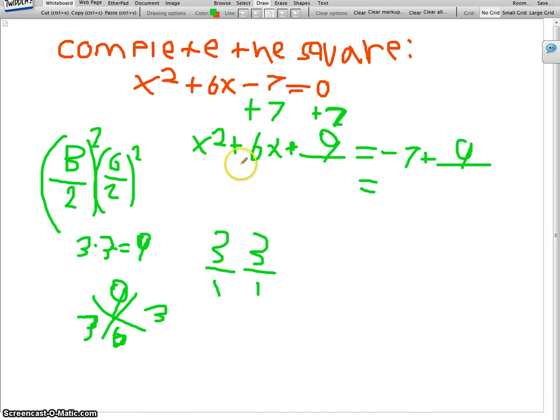It's x plus 3 squared equals, and then these you add them.